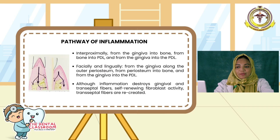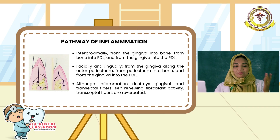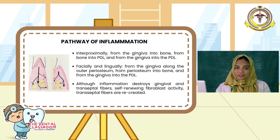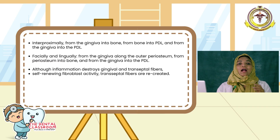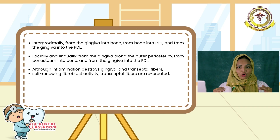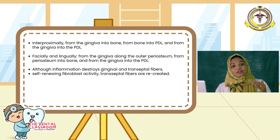Moving on to spread of inflammation. In the interproximal region, you can see in the figure the spread of inflammation is from gingiva to bone, or from bone to the periodontal ligament, or from gingiva into the periodontal ligament. In facial and lingual regions, the spread of inflammation is from gingiva along the outer periosteum, or from periosteum to bone, or from gingiva to periodontal ligament. A significant factor to note here is the transseptal fibers that run across the cementum of adjacent teeth over the alveolar crest — these get recreated due to their self-renewing nature even after destruction.